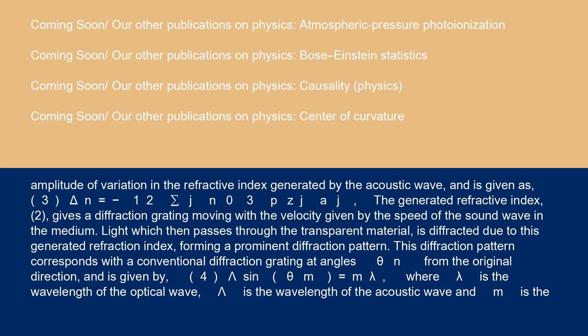δN is given as Equation 3: δN = -1/2 σJ n0³ PZJ AJ. The generated refractive index...